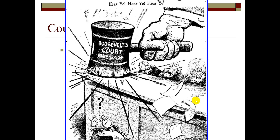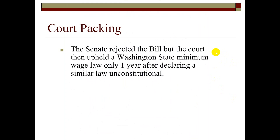You see the pounding of the gavel on the bench, with the judges acting fair. The Senate rejected the court-packing bill — the public hated it, the Senate hated it, and Roosevelt took a significant political hit. But shortly after, within a couple of months, the Washington state minimum wage law came up. Only one year after declaring a similar law in another state unconstitutional, the Supreme Court upheld the Washington state minimum wage law — showing that the court had changed.